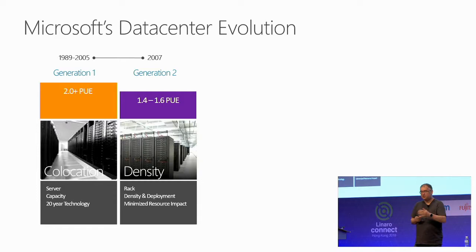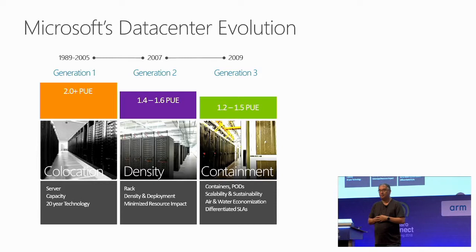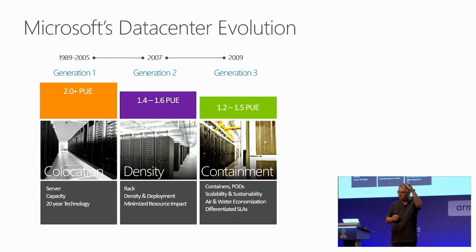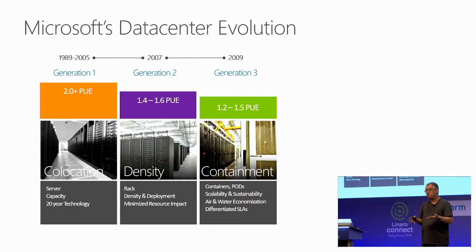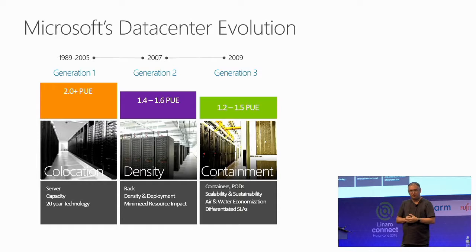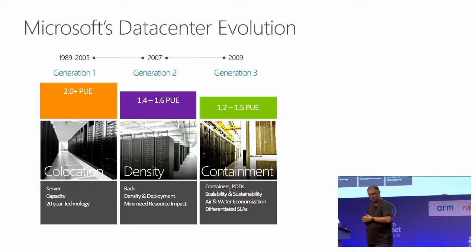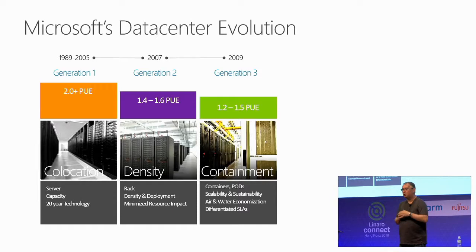The second generation was very much focused on density — how do we pack as much as we can? The third generation is actually where we introduced zones, with cold aisles and hot aisles. Cold air comes in, you suck it through the nodes, and exhaust it out through the hot aisle. We actually have all the I/O on the front end of the machine so that operators are in the cold aisle while working, because those hot aisles can get pretty hot indeed. That clearly improved efficiency a lot — we went to 1.2 and 1.5 PUE.